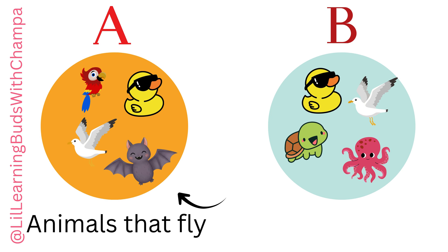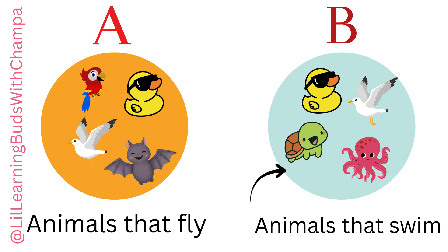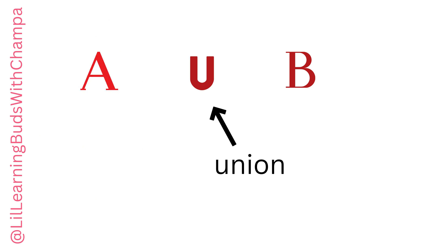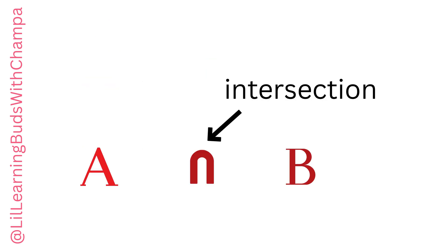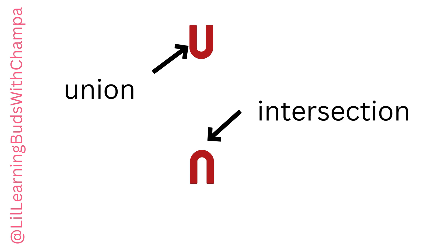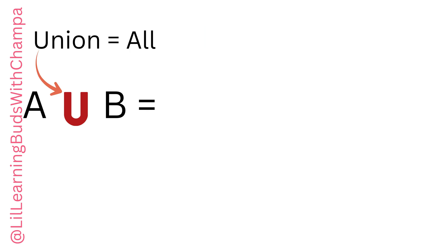So both circles have been filled. Circle A has all the animals that can fly and B has animals that can swim. There are two concepts here: Union and Intersection. Union is represented by U — it means all, basically everything from both circles.